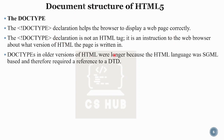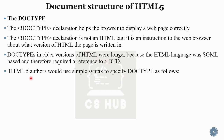DOCTYPE declarations in older versions of HTML were longer because HTML4 was based on SGML and required a reference to a DTD — Document Type Definition. In HTML5, the syntax is simplified to just DOCTYPE HTML.